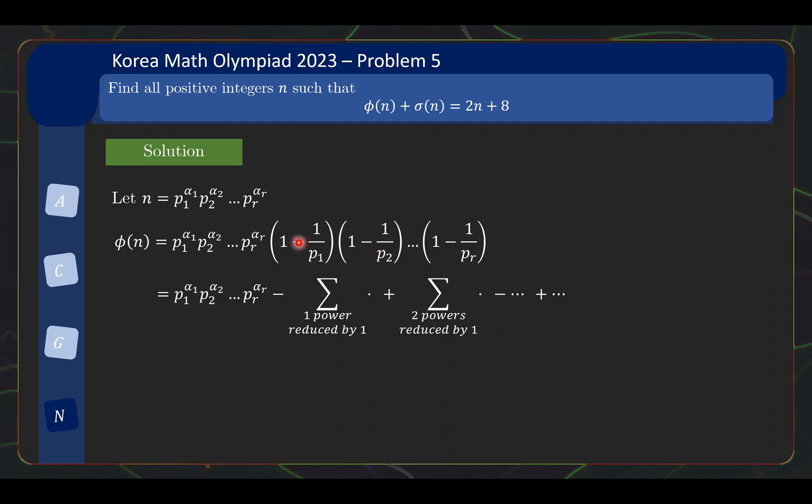Similarly, you can choose two of the terms to be 1/pᵢ and then the rest of the terms to be 1. So if you take that, then two of the terms will have their powers reduced by 1. And in this case, you have a plus sign and then you have the minus sum of 3 powers reduced by 1 and so on and so on until all r are being reduced by 1.